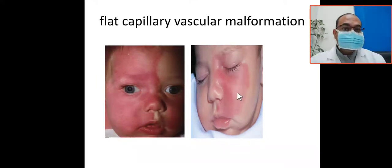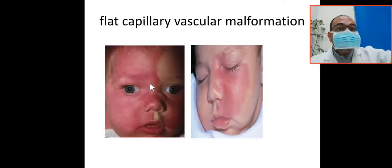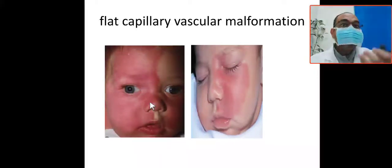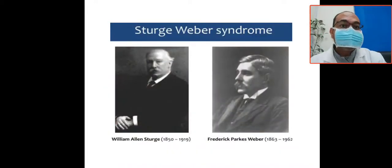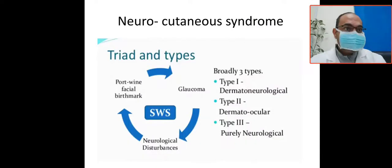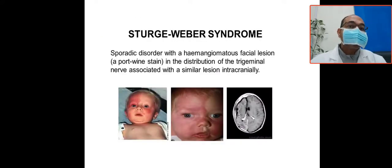The flat capillary vascular malformation is distributed along the trigeminal nerve, covering the scalp and ipsilateral hemi-face. This is called a neurocutaneous syndrome, named after the two doctors Sturge and Weber who discovered it. The triad consists of port wine facial birthmark, glaucoma, and neurological disorder such as seizure.